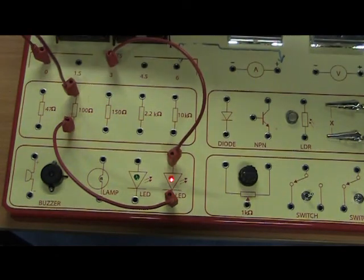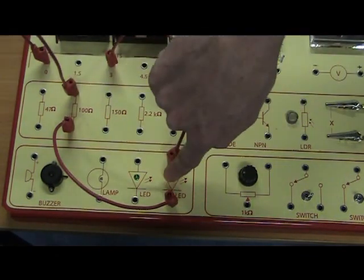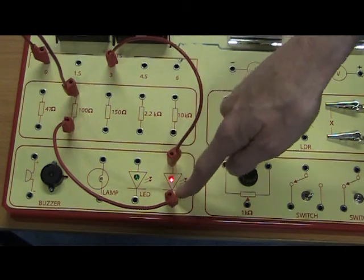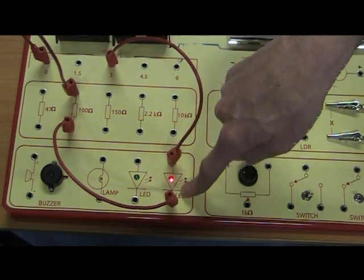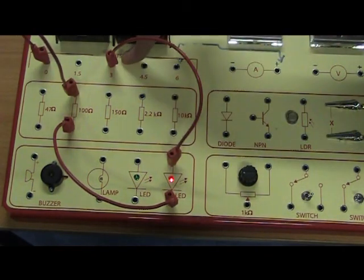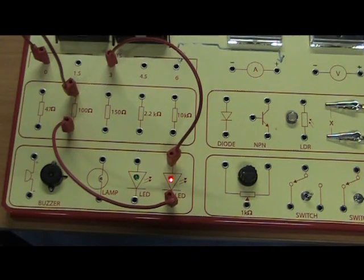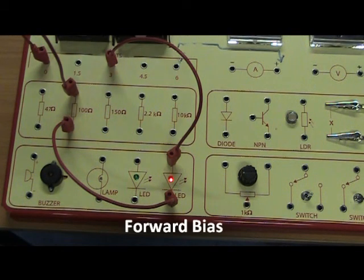So again the minus end of the battery has to be connected to this minus end of the diode, the bit that looks like a minus there. The other side connected to the plus side. And by connecting the positive end of the diode to the positive terminal it is called forward bias. That means the current will flow.